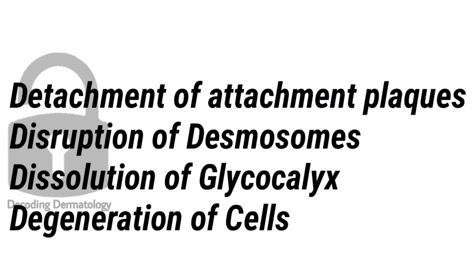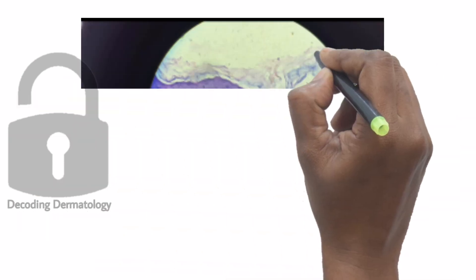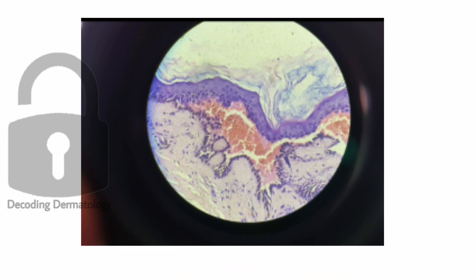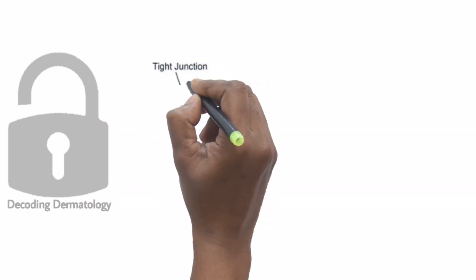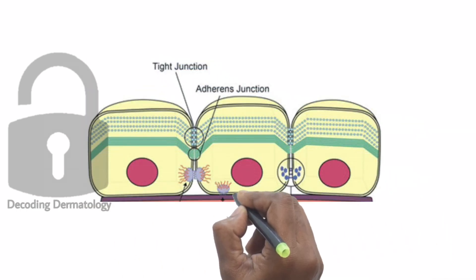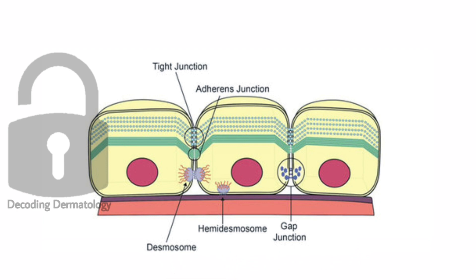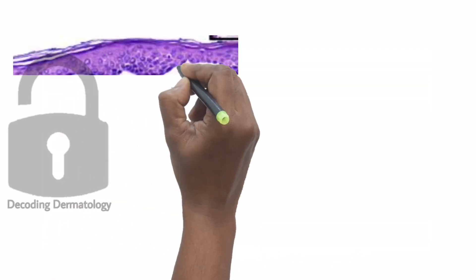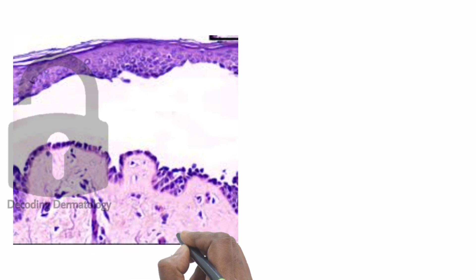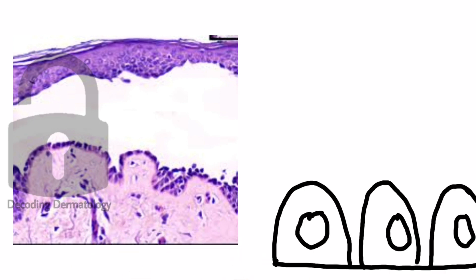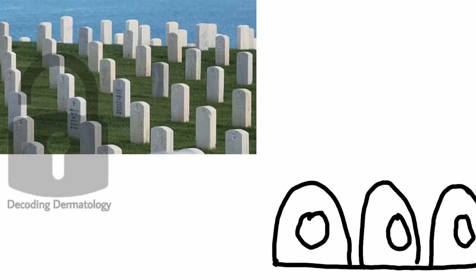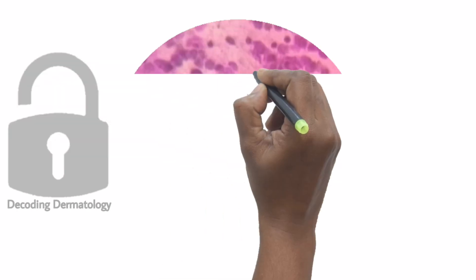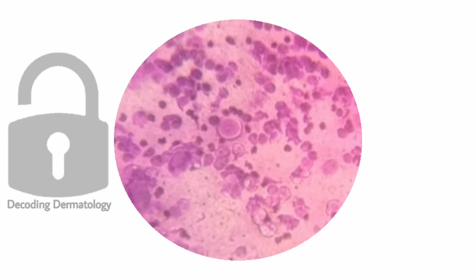When we look into the histopathology of pemphigus vulgaris, we see a suprabasal bulla. The basal cells are attached to the basement membrane with the help of hemidesmosomes. Hemidesmosomes are not disturbed in pemphigus vulgaris — that is why the cells remain attached to the basement membrane, but their side-to-side attachment gets disrupted. That is why the cells look like tombstones. Inside the bulla, we can see the acantholytic cell.